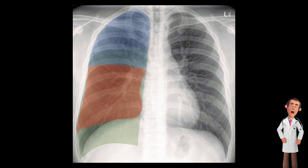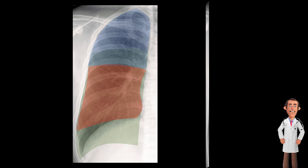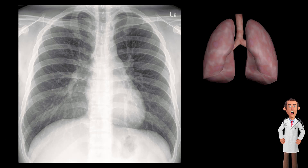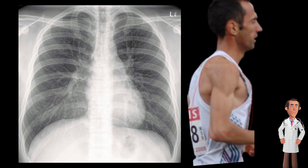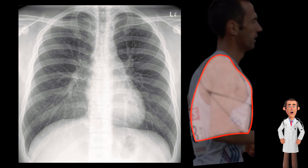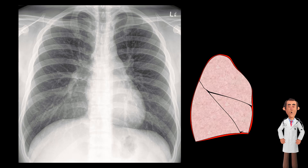As you have probably noticed, there is some considerable overlap between the lobes. This is due to the three-dimensional structure of the lungs. The lower lobe lies in a space posterior to the other lobes and the dome of the diaphragm.